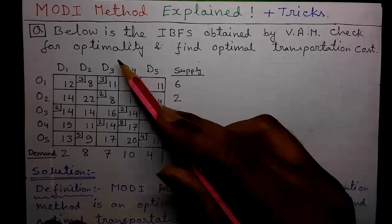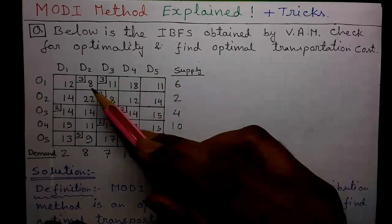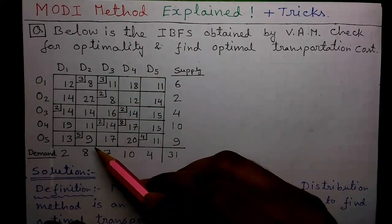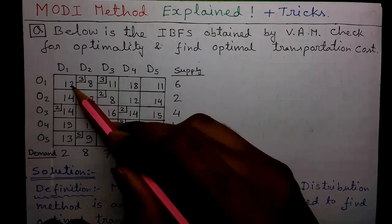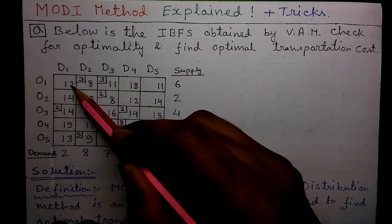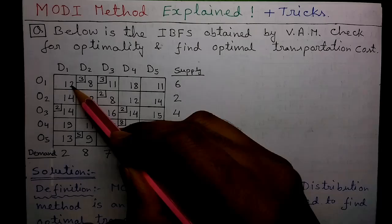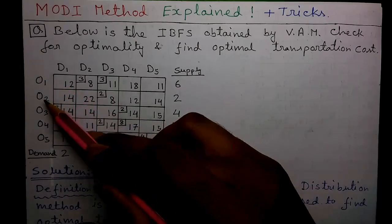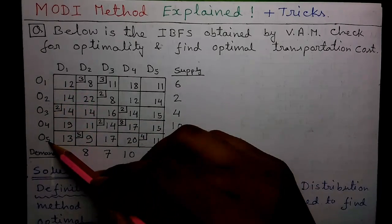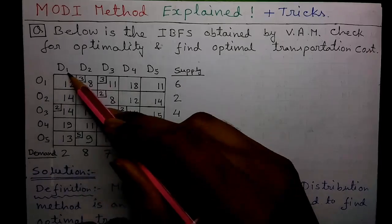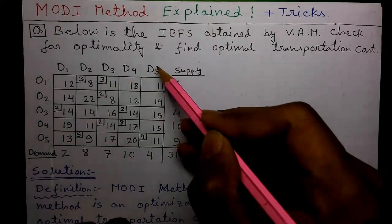So for some basics, this is called the transportation problem and this matrix is called the cost matrix, where the individual cell values represent the transportation cost. So here we have 5 origins, O1, O2, O3, O4 and O5, and 5 destinations, D1, D2, D3, D4 and D5.